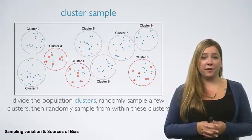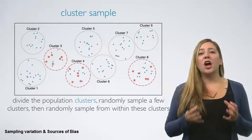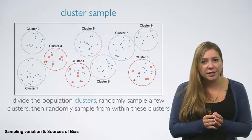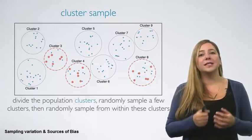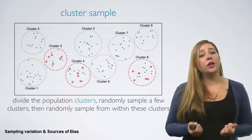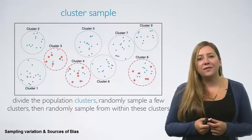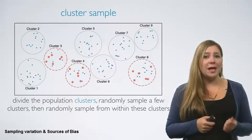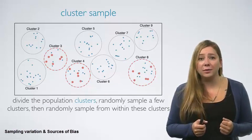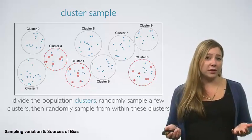Cluster sampling looks similar to stratified sampling, but the difference is that the groups — called clusters — are not necessarily homogeneous within themselves. But each cluster is similar to another, such that we can get away with sampling from just a few of the clusters. Usually we do this for economical reasons. For example, one might divide a city into geographic regions that are on average similar to each other, and then sample randomly from a few randomly picked regions in order to avoid travelling to all regions.